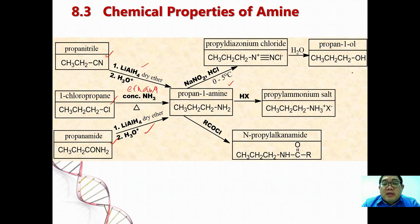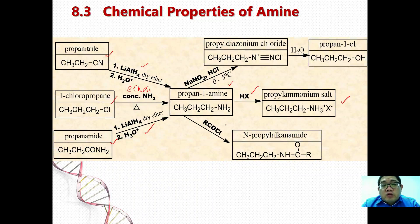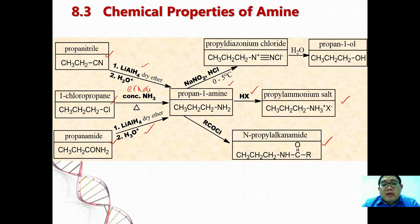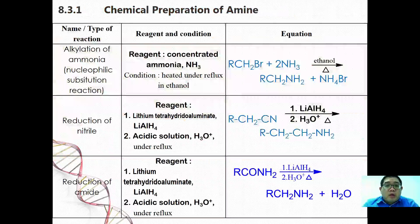Generally, amine has three reactions. Since amine is a base, it can react with hydrochloric acid or any acid to form salts. Amine can also react with acyl chloride to form a different class of amide, and when we add sodium nitrite under cold conditions, it will eventually lead to the formation of alcohol.